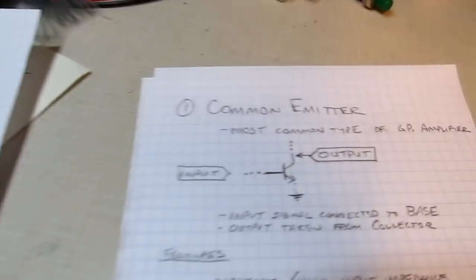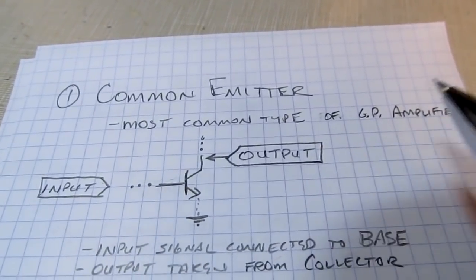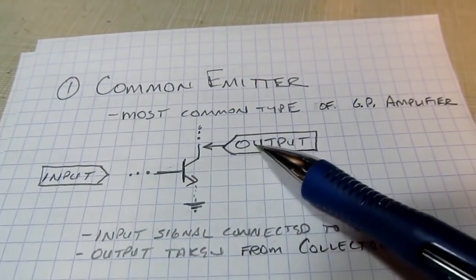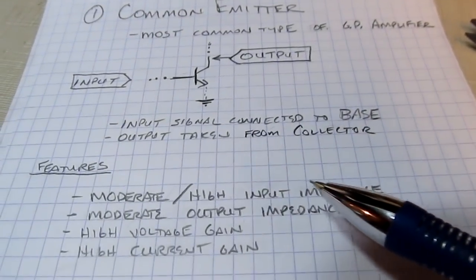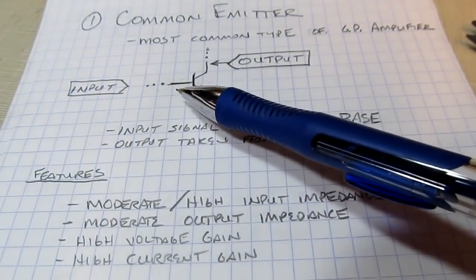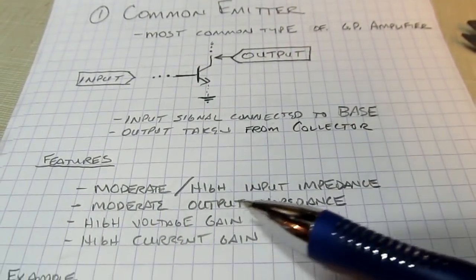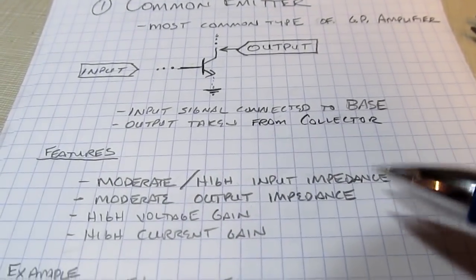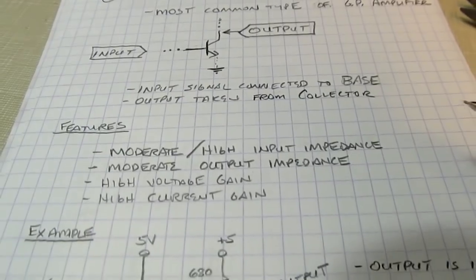The first and most common type is the common emitter — you'll see this most often. The input is applied to the base, the output is taken off of the collector. The circuit has a moderate to high input impedance, meaning the circuit is not going to load down what it's connected to. It also has a moderate output impedance, but it's got a high voltage gain and a high current gain.